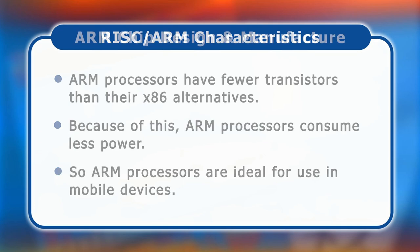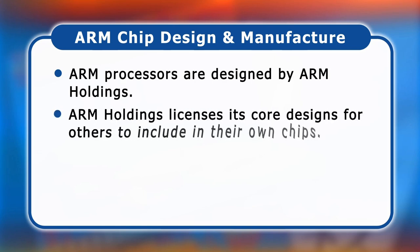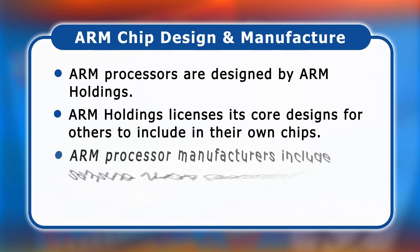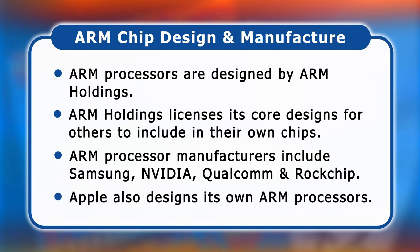ARM processors are designed by ARM Holdings, which unlike Intel and AMD is not a microprocessor manufacturer. Instead, ARM Holdings designs processor cores which are then licensed to other companies to include in their own chips. Companies that manufacture ARM processors include Samsung, Nvidia, Qualcomm, and Rockchip. Apple also designs processors based on an ARM core, currently used in iPhones and iPads, manufactured for Apple by third parties.